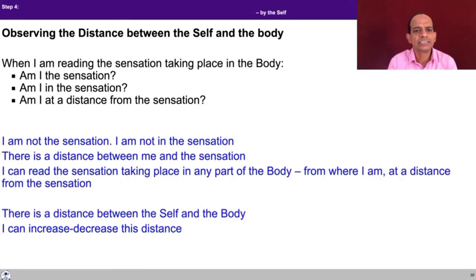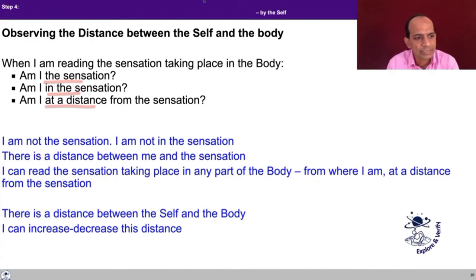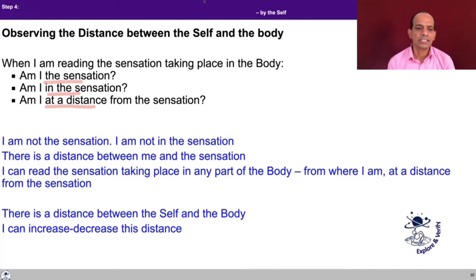In step four, you are observing the distance between the self and the body. When I am reading the sensation taking place in the body, try to find out: Am I the sensation? Am I in the sensation? Or am I at a distance from the sensation? Sensation is something happening in the body — so of course I am not the sensation. Am I in the sensation? Whether you are part of the sensation or something different from it. You can further see whether you are at a distance from the sensation.